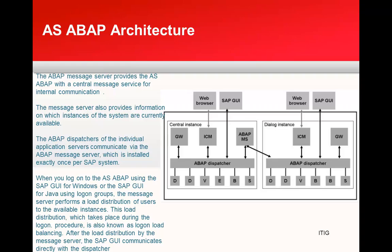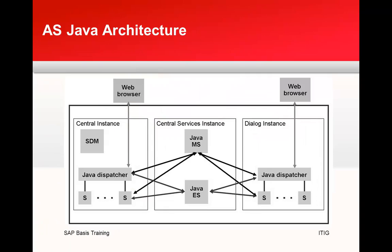Depending on the work you want to do — dialog, update, background processing, or printing — the respective work process is assigned to you. The dialog instance on the right side has all the same processes but does not have a message server. There is only one message server and one enqueue server in the environment, centrally managing all activities.